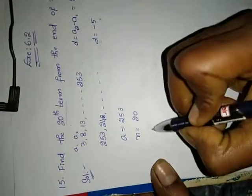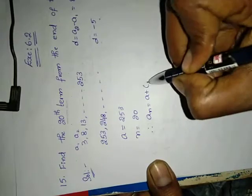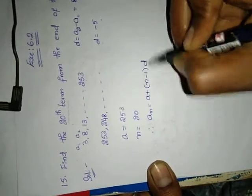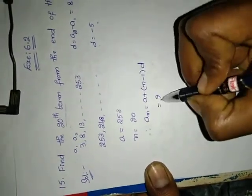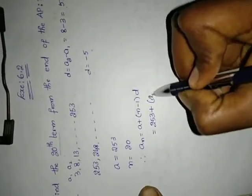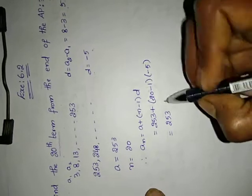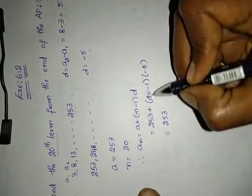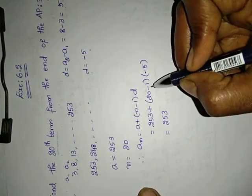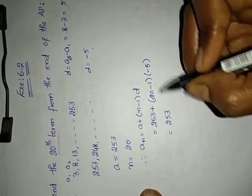Therefore, a_n equals a plus (n minus 1) into d. So a_20 equals 253 plus (20 minus 1) into (minus 5). That equals 253 plus 19 into minus 5. 19 into 5 equals 95.